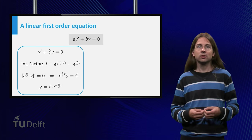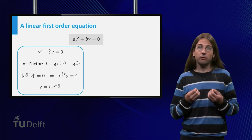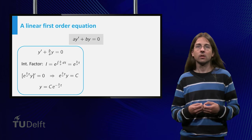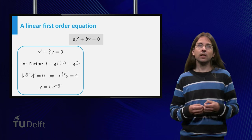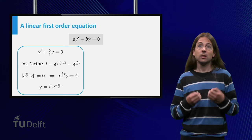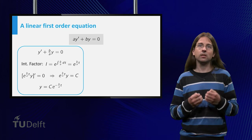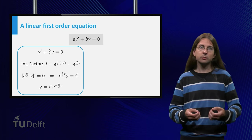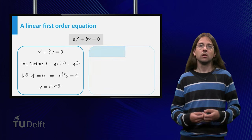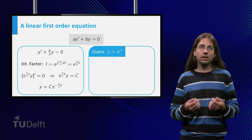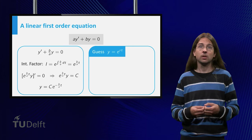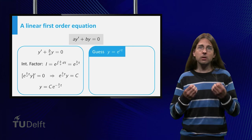The solutions are exponential functions with a proper constant in the exponent. Once we realize that the solutions are exponential functions, we can use this to more easily determine this constant in the exponent. Indeed, assume y equals e to the rt is a solution for some r. How can we determine r?